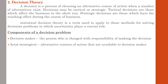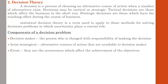Events, otherwise known as states of nature, are the occurrences that affect the achievement of objectives. They constitute a mutually exclusive and exhaustive set of outcomes describing the possible behavior of the environment in which the decision is made. The decision maker has no control over which situation or environment will occur and can only attach a subjective probability to events. The results of selecting an alternative are known as events.